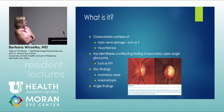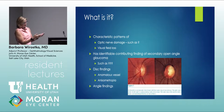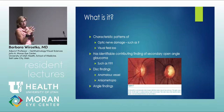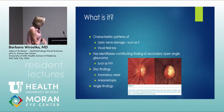Disc findings include anomalous vessels — the disc can look asymmetric due to anomalous vessel patterns from embryogenesis. A small cup-to-disc ratio does not rule out glaucoma; you can have glaucoma with 0.1 and 0.3. You have to look at the rim, the totality. With secondary glaucoma, history, clinical exam, and angle findings are critical.